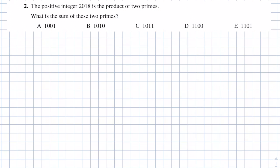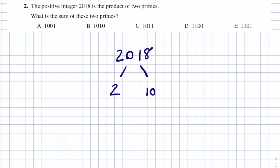Question 2. The positive integer 2018 is the product of two primes. What is the sum of these two primes? The answers are: A is 1,001; B is 1,010; C is 1,011; D is 1,100; and E is 1,101. We know the first prime number is 2. Because 2018 is an even number, we know that 2 is a factor of 2018. So if we halve 2,000 we get 1,000, and if we halve 18 we get 9, giving us 1,009.